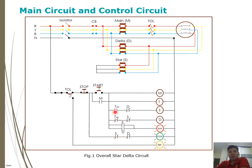Closing this contact and opening this contact — since delta is still open, delta is not energized, and this eventually energizes the star coil. Energizing the star coil opens the delta interlock contact so delta will not be energized. At the same time, energizing S closes the S contact and the motor run indication light will light up.